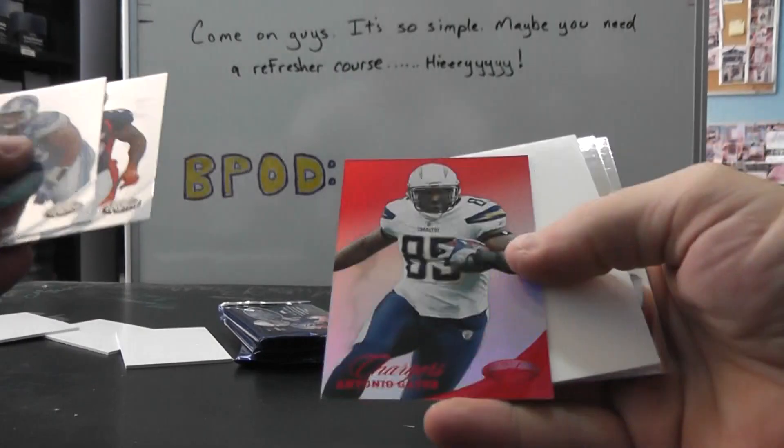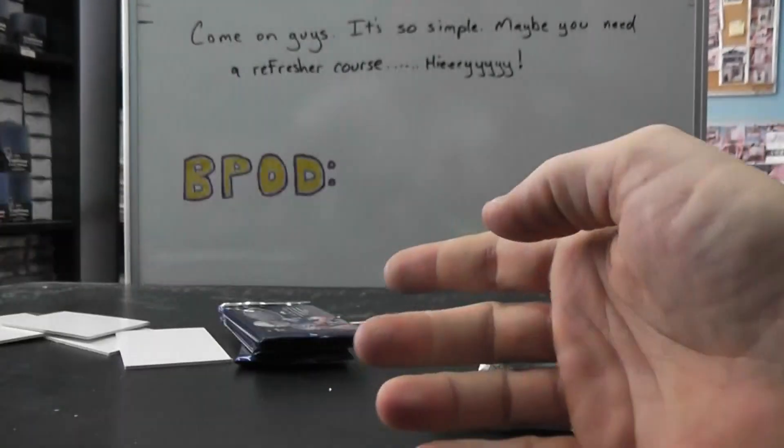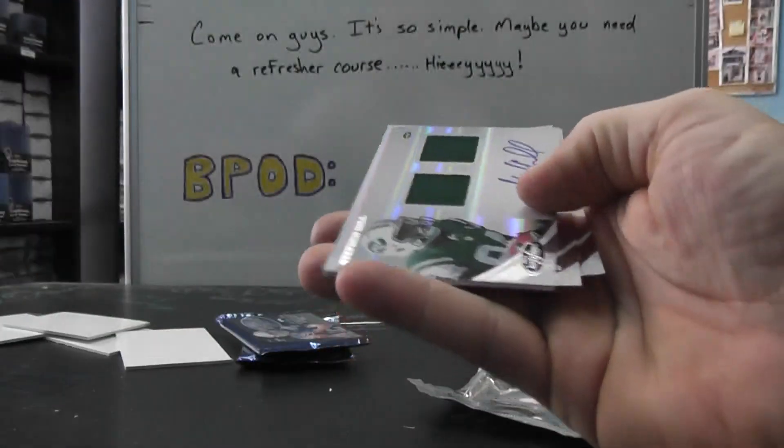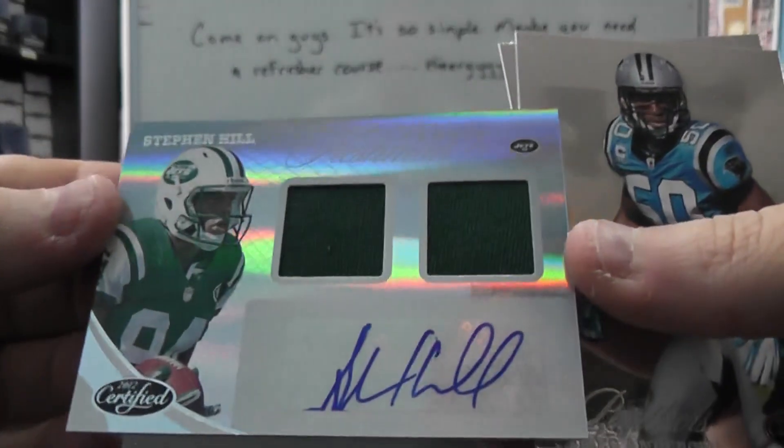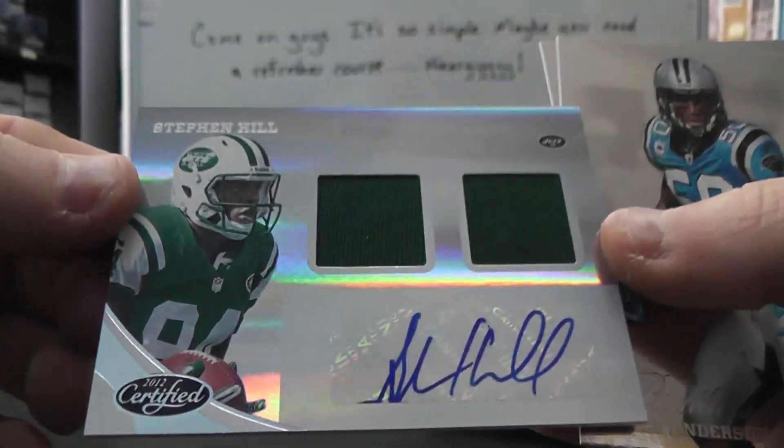Should be an auto in here somewhere. Antonio Gates Mirror Red to $2.50. I think it's right here. Yep, Stephen Hill. He had a touchdown last week. Stephen Hill, I think it's first of the year. Dual jersey autograph, $4.99.